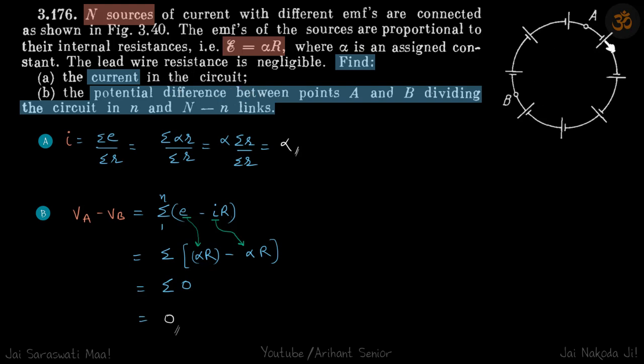So current in the circuit, all the batteries are in series. So let's sum up the batteries and divide that by total resistance, that will be the current. So sigma E by sigma R and E is given as alpha R for each battery. So this we can write as sigma alpha R by sigma R. Alpha is a constant, comes out and this becomes alpha.